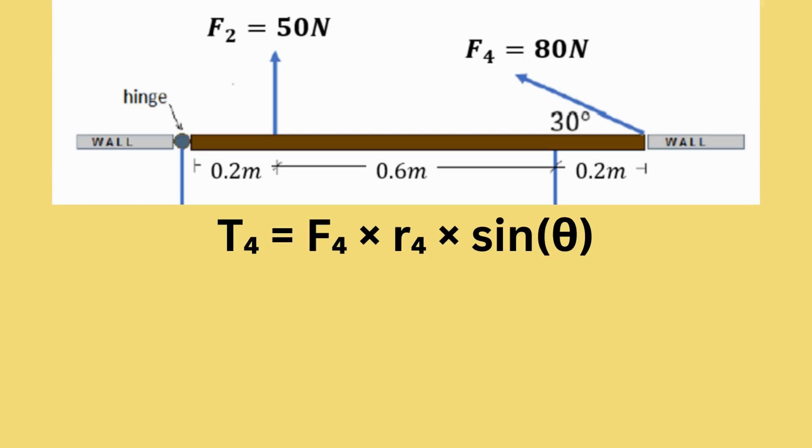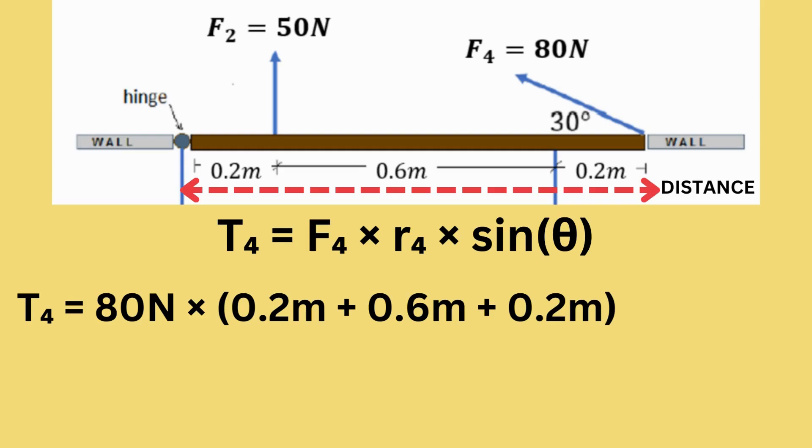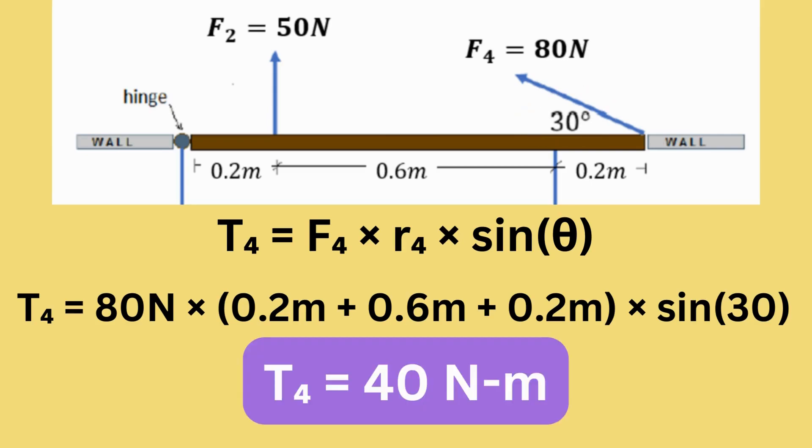Let us solve for T4. T4 equals 80 newtons times 0.2 meters plus 0.6 meters plus 0.2 meters, which is the distance of F4 from the hinge, times sine 30, because the force F4 is applied at 30 degrees on the door. Finally, we solve for T4, which is 40 newton meters.